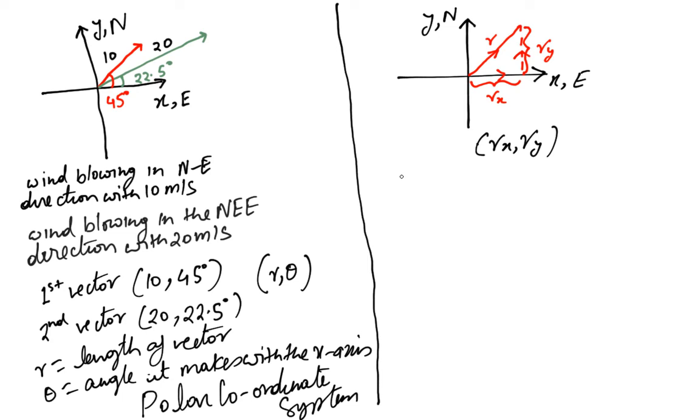And this way of expressing the vector is called the Cartesian Coordinate System.